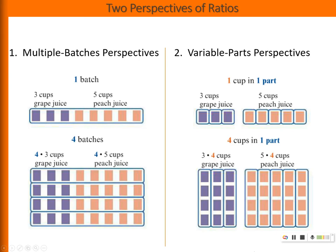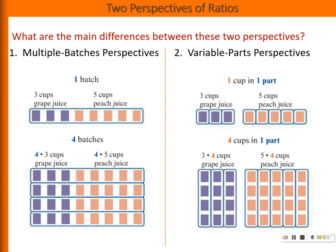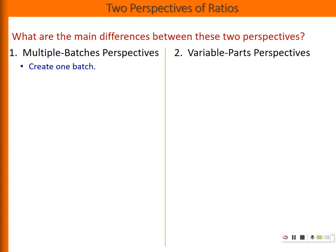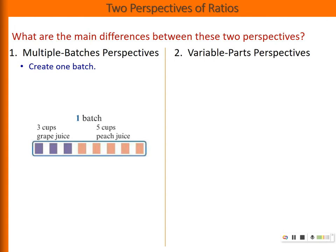Now take a minute to analyze these two representations. What are the main differences between these two perspectives? For the multiple batch perspective, we begin by creating a batch. For example, this batch consists of two parts: three cups of grape juice and five cups of peach juice.